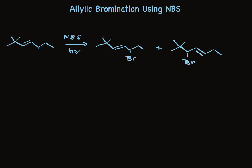Whether you use MO theory or resonance structure theory to explain the result, either way, NBS creates small amounts of bromine and bromine radicals, which react specifically at the allylic position, ultimately substituting bromine at both ends of the allylic system, resulting in two products.